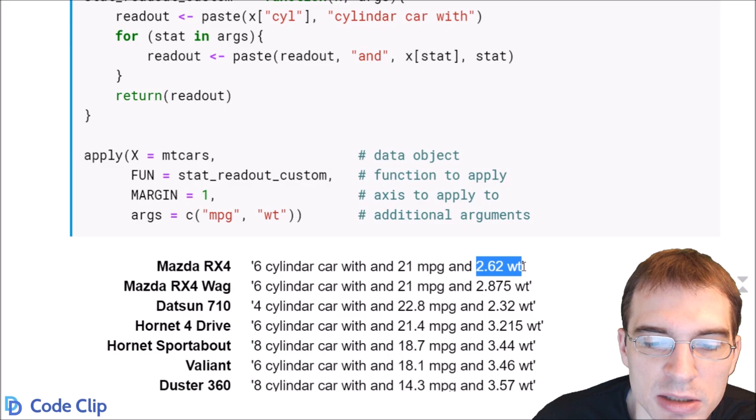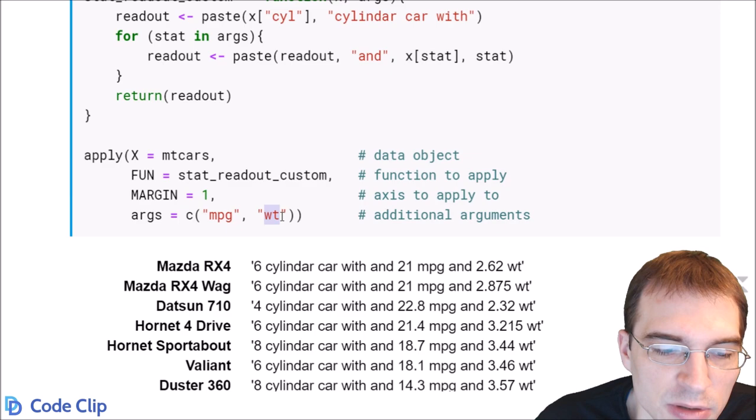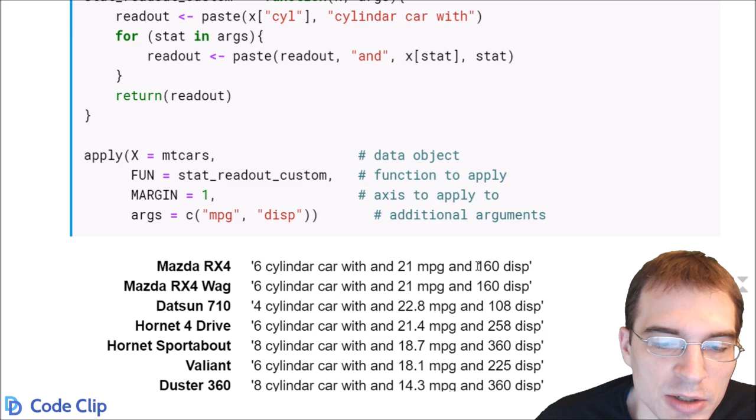And we could change those to anything else or take things out and we would get something different. So if we wanted to say change weight to disp, we could rerun this and then our sentence has that stat in it instead.